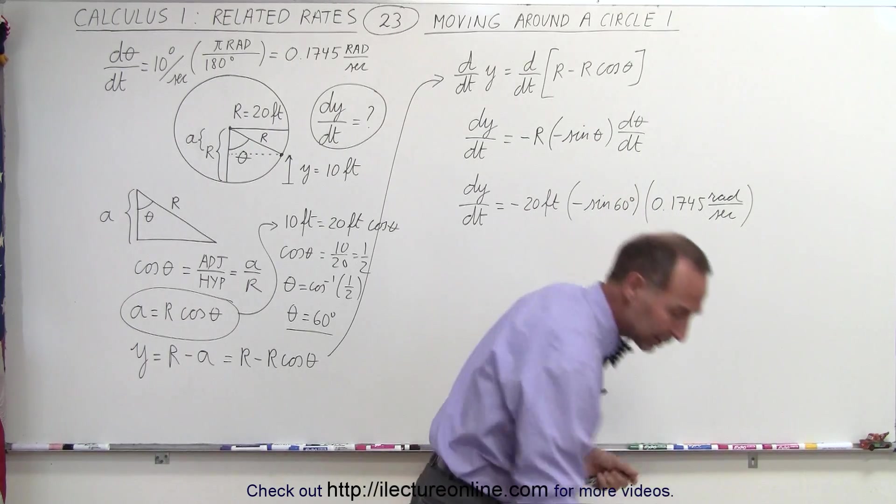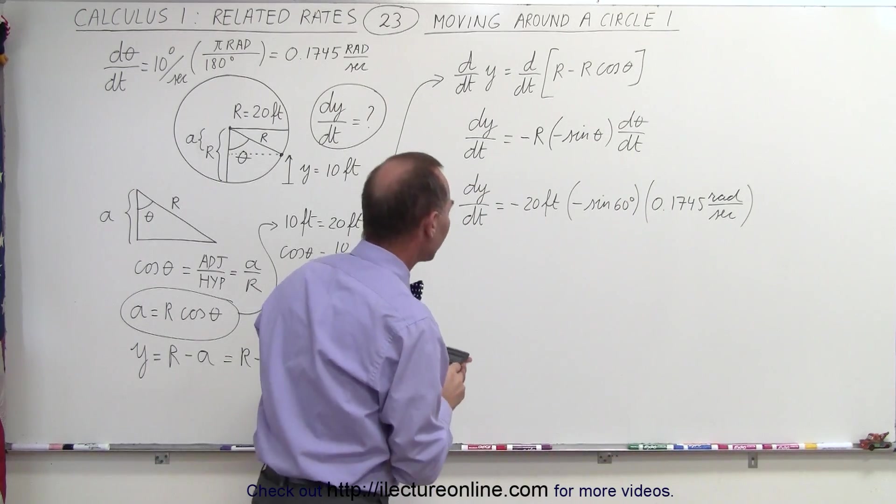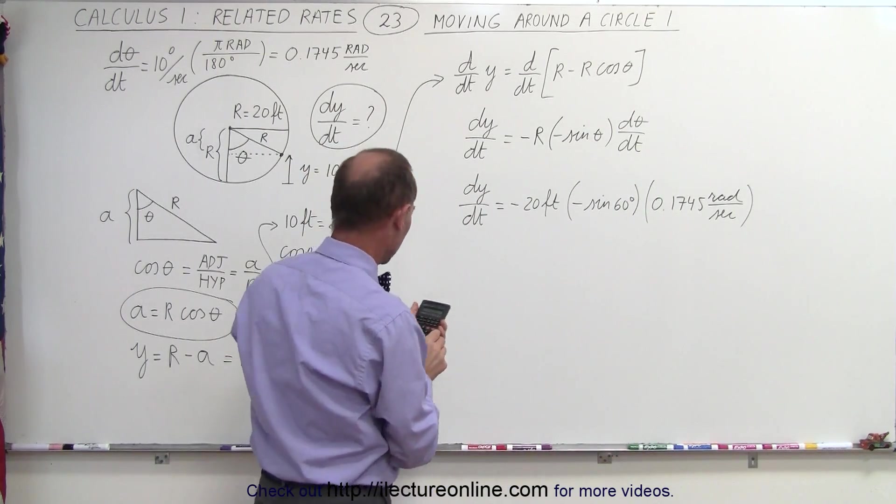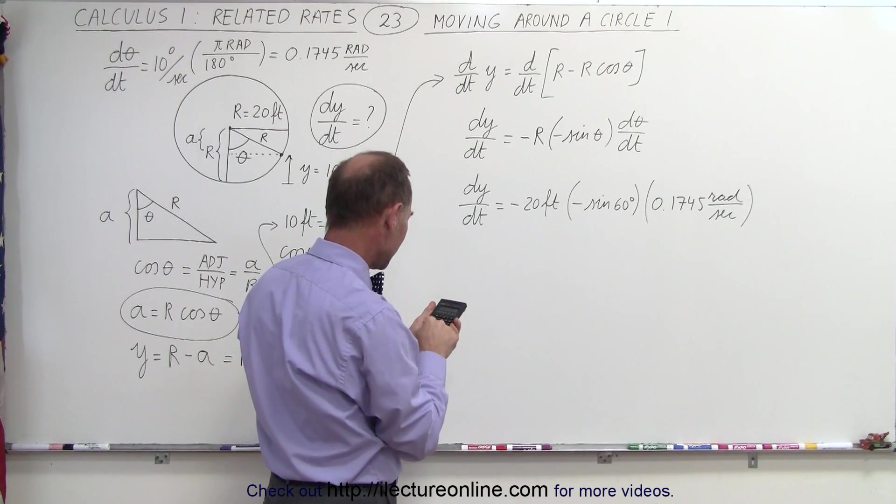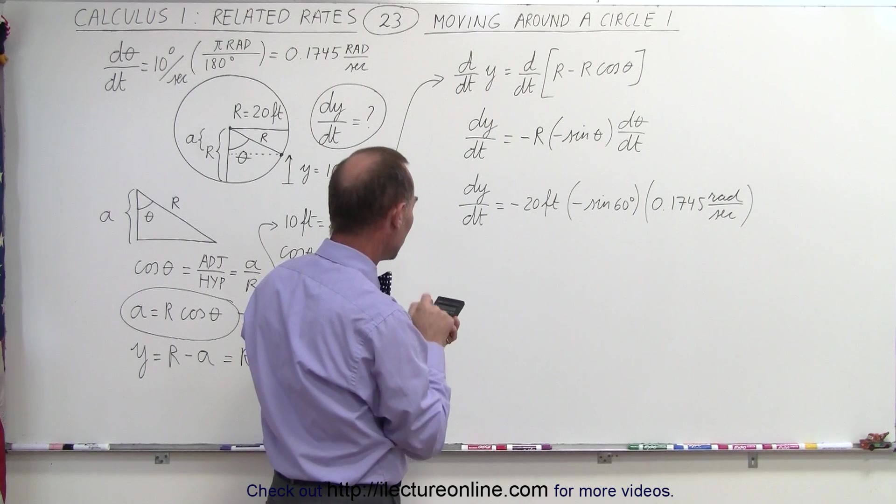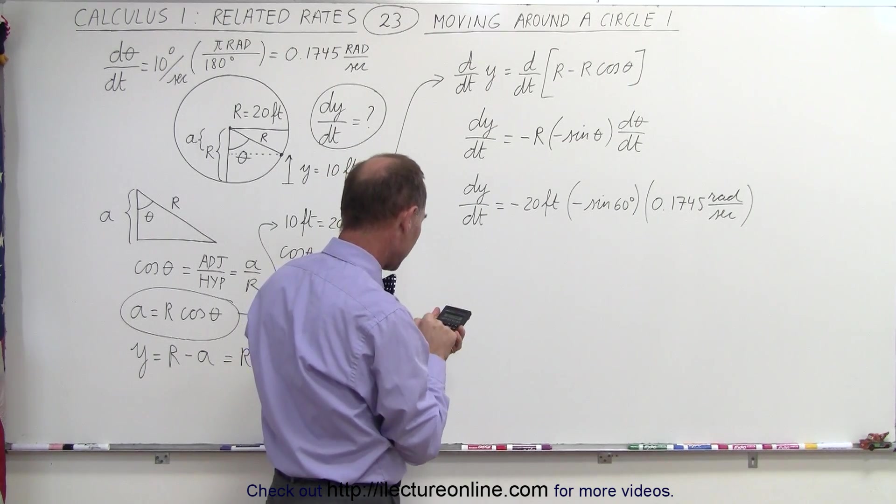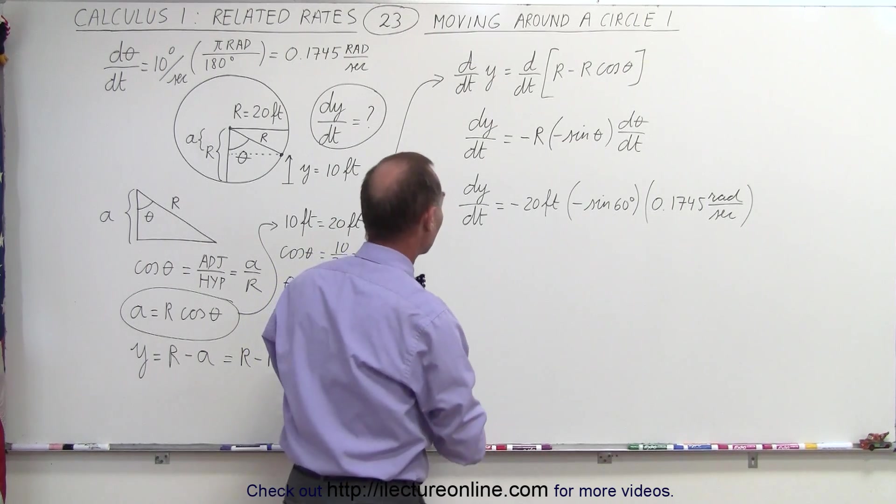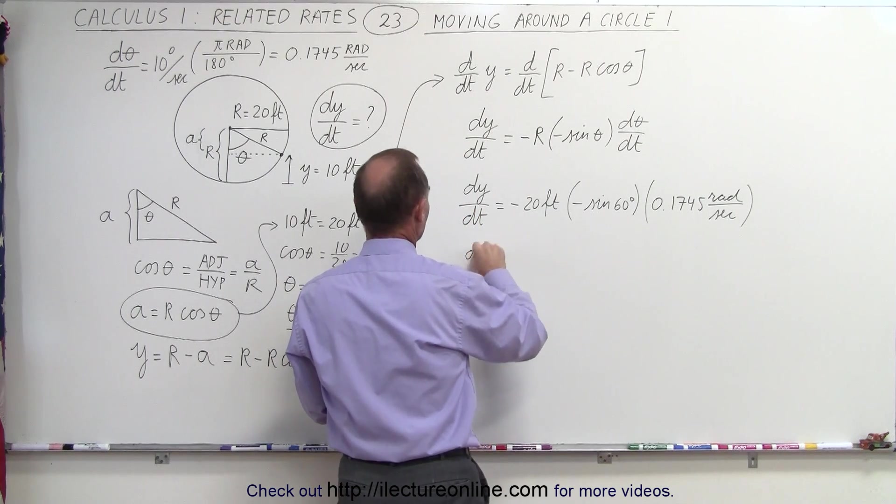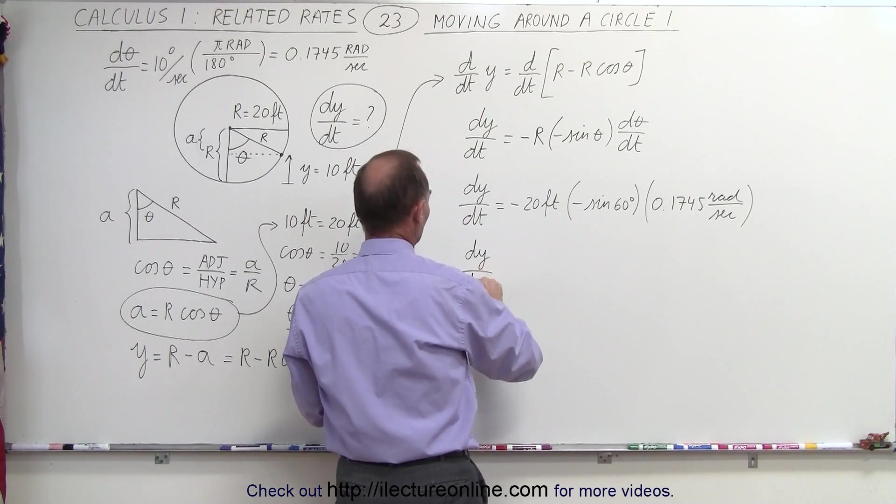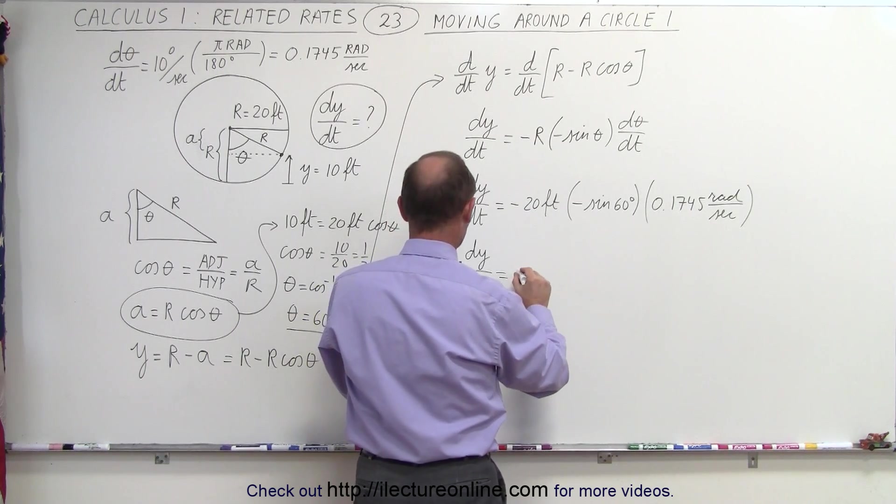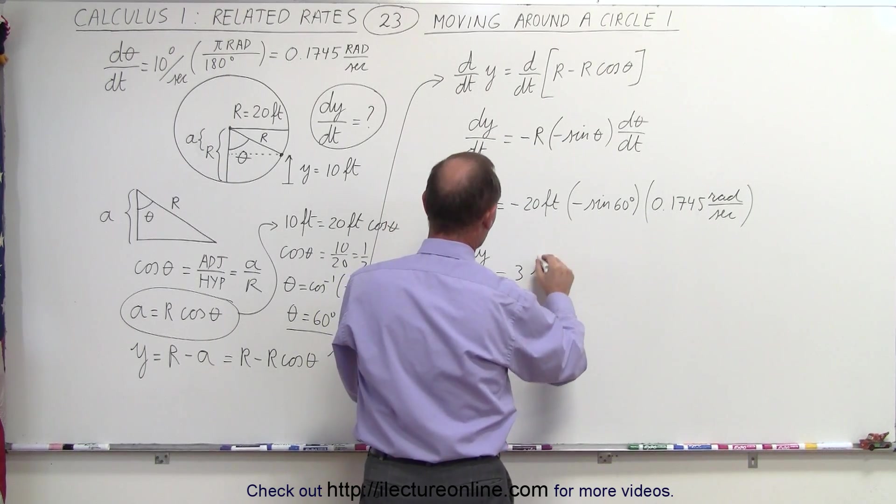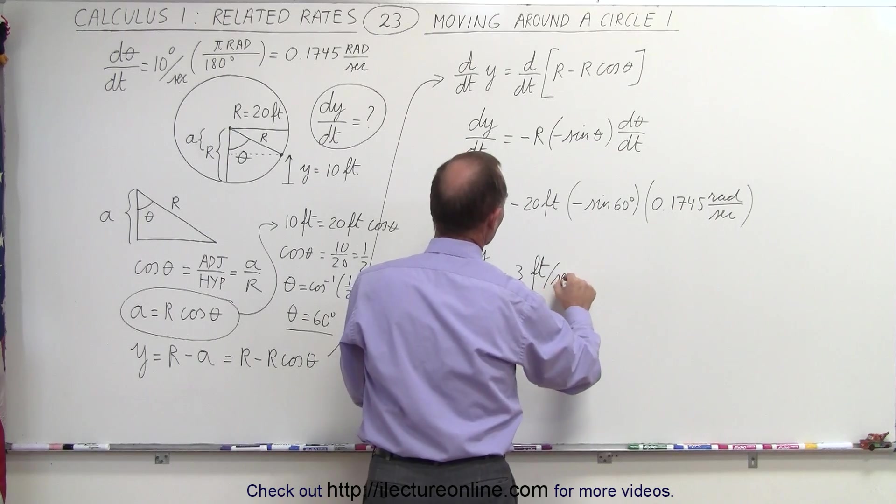And now we can go ahead with the calculator, figure out what that's equal to. So we take that, and we multiply it times the sine of 60, and we multiply it times 20 feet. And that ends up being dy dt. Of course, notice that the two negatives cancel each other, so that's going to be a positive 3. Let's round it off to 3 feet per second.